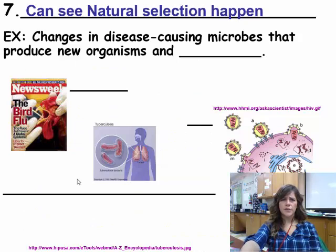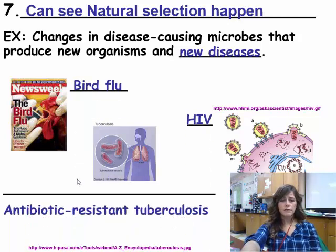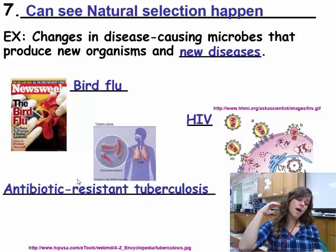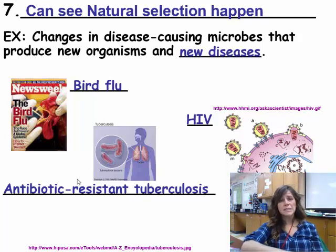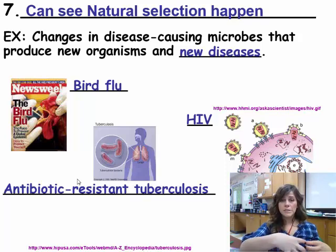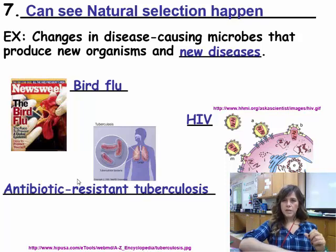We can also see evolution every day when we think about diseases. Changing diseases cause microbes to produce new organisms and new diseases - bird flu, HIV, antibiotic-resistant tuberculosis. We constantly need new drugs for HIV because it's constantly changing. There's a new flu shot every year because the flu keeps changing - whatever form isn't resistant to current treatments stays alive and spreads. Those are the seven different ways that help us have evidence for evolution.